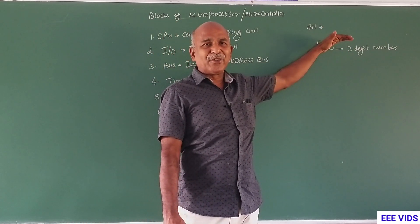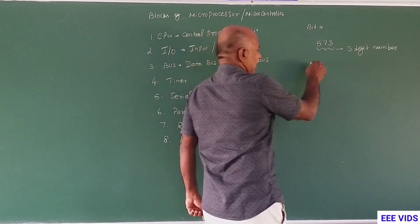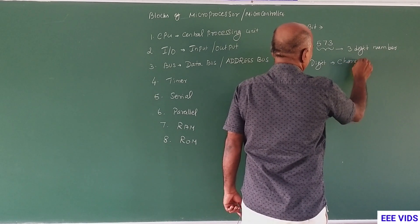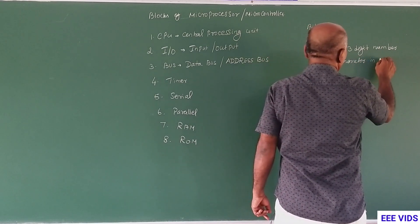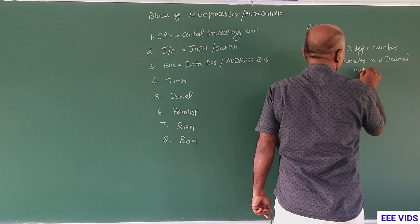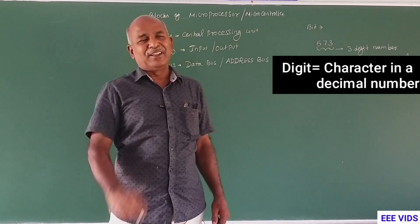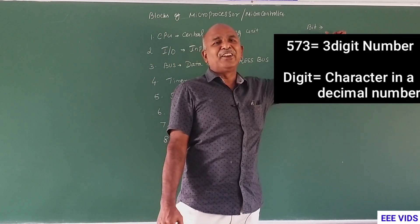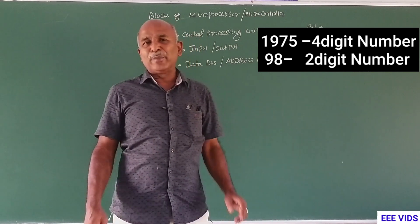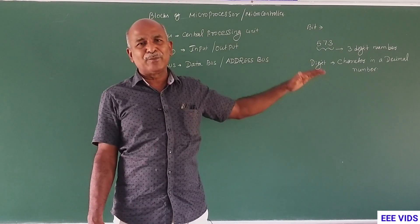So what is the meaning of digit? Digit has another meaning. Digit is a character in the decimal number system. One character in the decimal number system is called a digit. So this is a three-digit number — three characters are three digits. 9, 8: two characters are a two-digit number.